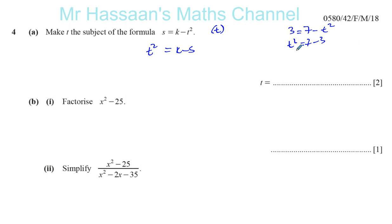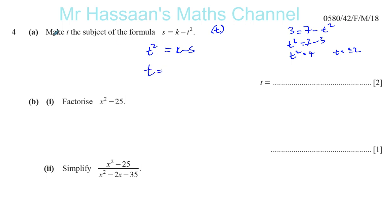In this numeric case, that means T squared equals 4, and then T equals the square root of 4, which gives you plus or minus 2. So here we can do the same thing and carry on. We can't simplify K minus S because they're not like terms, so we can't simplify any further. Then we go ahead and take the square root of both sides, because they want us to make T the subject - not T squared.